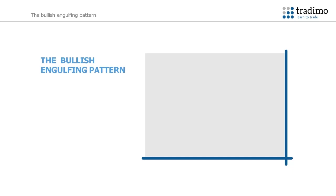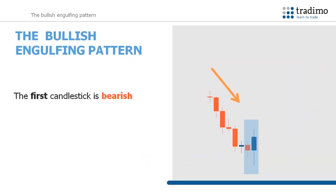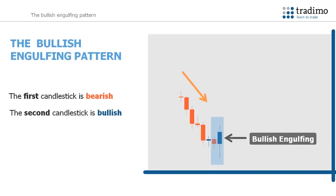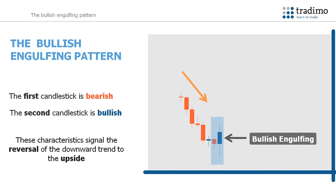Let's have a closer look at the characteristics of a bullish engulfing pattern. You can see in this example the market is in a downtrend. Notice the highlighted area where the first candlestick of the pattern is bearish, shown by its orange colour. The second candlestick in the pattern is bullish, indicated by its blue colour, and engulfs the body of the preceding bearish candlestick. These characteristics signal the reversal of the downward trend to the upside and demonstrate how the bears were overpowered by the bulls.